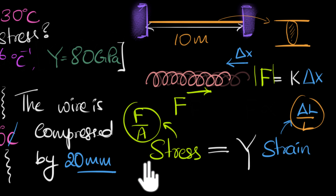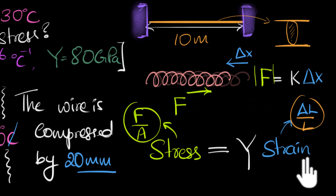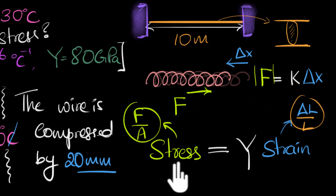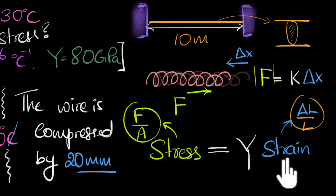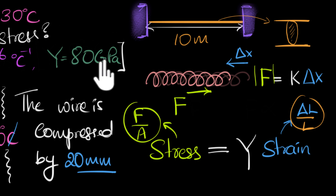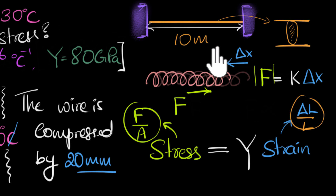We have discussed stress and strain in another chapter on solids, so watch that video for more clarity. All we need to do now is calculate this stress, which is called thermal stress — because the stress was generated due to thermal expansion. We already know Y (Young's modulus), delta_L (20 millimeters), and the initial length L (10 meters), so we just plug in and calculate.